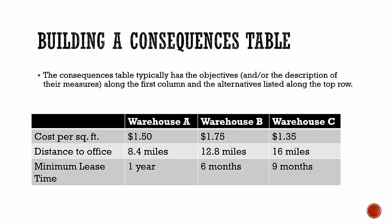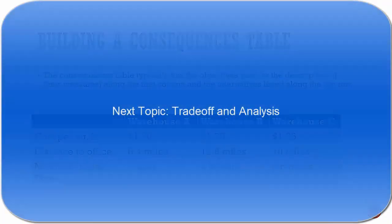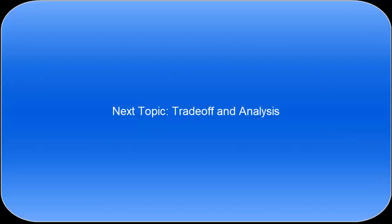In all of the other columns we have a column for each alternative, and we put the measure for that alternative in that column. And that's it — that's how you build a consequences table. The next topic will be on trade-off analysis.